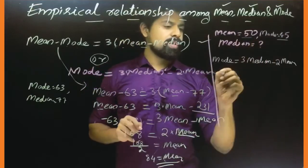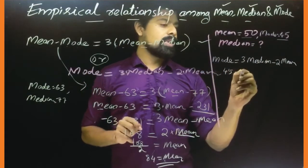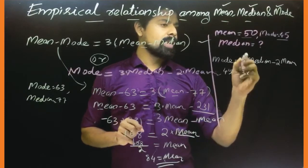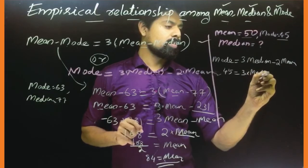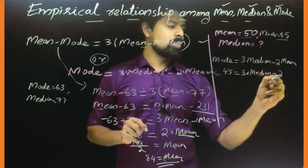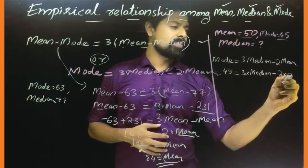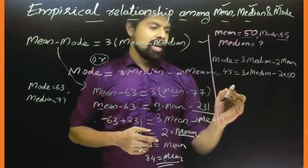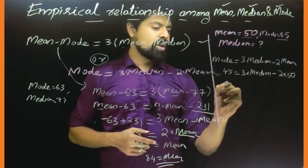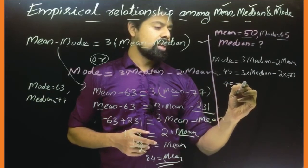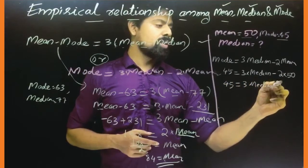The mode is 45. So substituting into the formula: 45 is equal to 3 into median, minus 2 into 50. Now we can add 100 to both sides and solve for median.